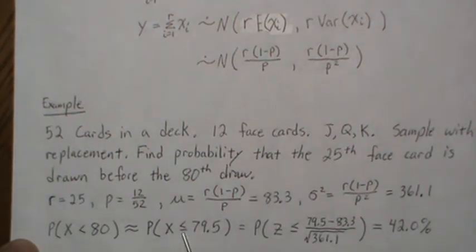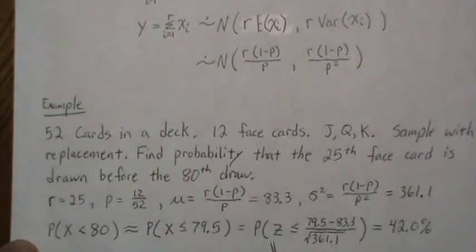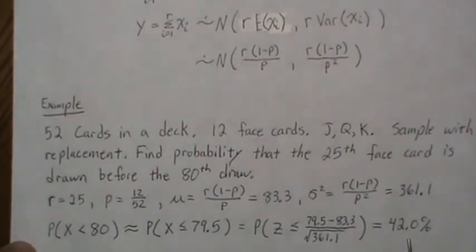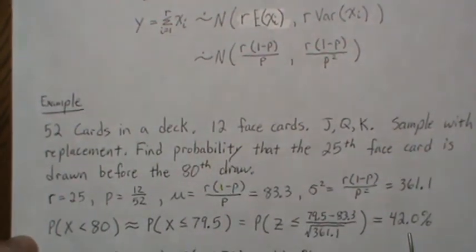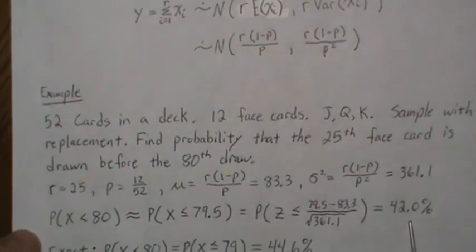Now, if we subtract the mean and divide by the standard deviations of both sides, this becomes approximately a standard normal distribution. And that probability is 42%. So there's 42% chance that we find the 25th face card before the 80th throw.